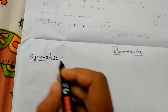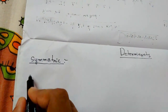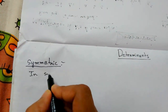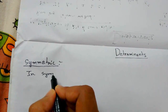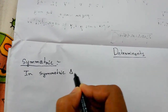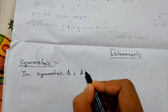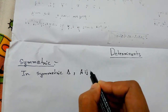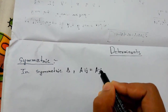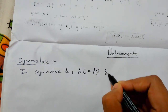In a symmetric determinant, the main thing is that a of ij is equals to a of ji, for all i and j.